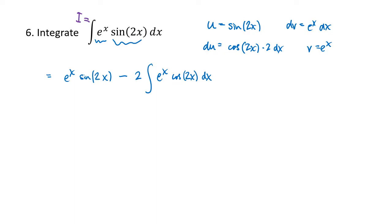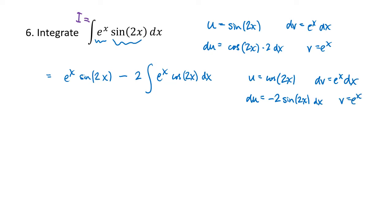So we use parts again. Because we chose the trig function for u and the exponential for dv, we must choose them the same way — choosing the opposite would get us back to the original integral with everything canceling. We take the derivative of cosine of 2x: that's negative 2 sine of 2x. The antiderivative of e to the x is again e to the x. We have e to the x sine of 2x minus 2 times the whole expression: e to the x cosine 2x minus the integral of v du. We've got a negative sign already, so minus a minus gives us a plus.